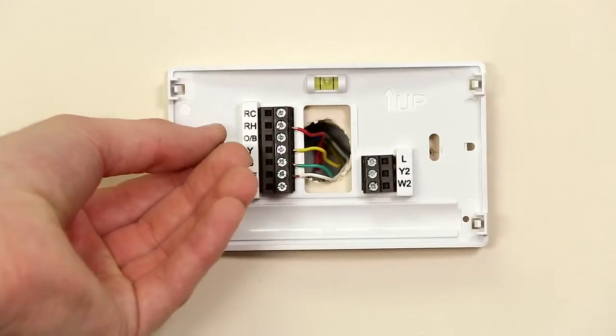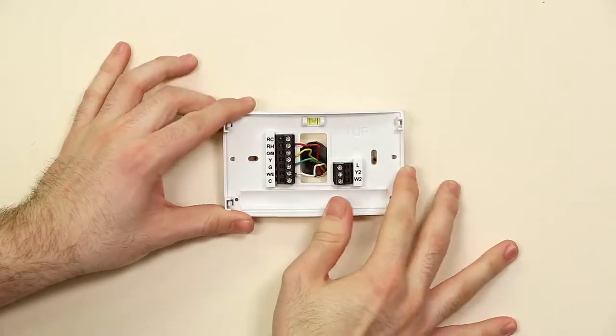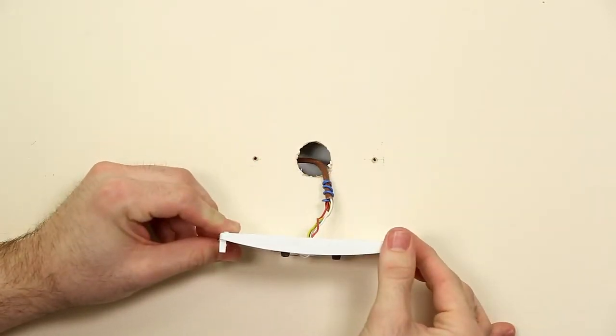While leaving the wires connected to the base plate, unscrew the base plate from the wall and gently pull the wires and base plate away from the wall slowly. You should be able to pull the wires and wall plate out several inches.